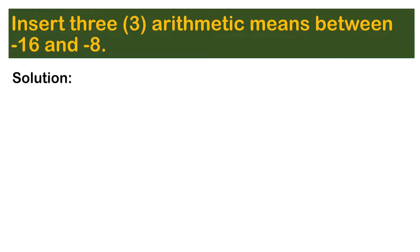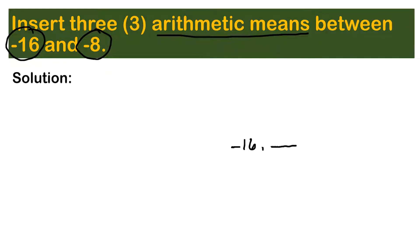Let's have the first example: insert three arithmetic means between negative 16 and negative 8. So we have negative 16, then three arithmetic means, and then negative 8. This gives us five terms in this sequence.